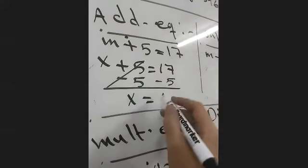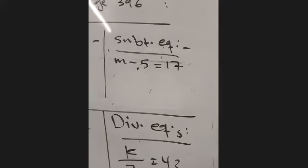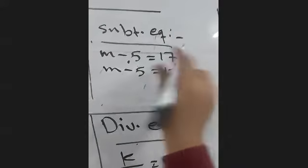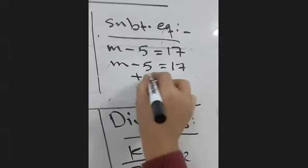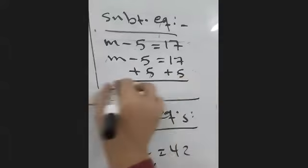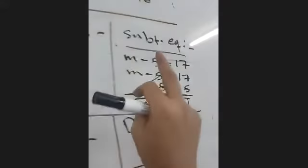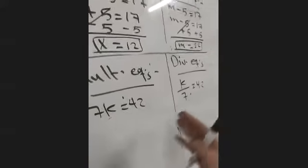In division equations you have a division sign. In addition equations, we rewrite the equation — for example x plus 5 — and apply minus 5 on both sides, so x equals 17 minus 5. In subtraction equations, we rewrite the equation x minus 5 equals 17 and add the connected number to both sides, giving x equals 22. So in addition we do subtraction, and in subtraction we do addition.